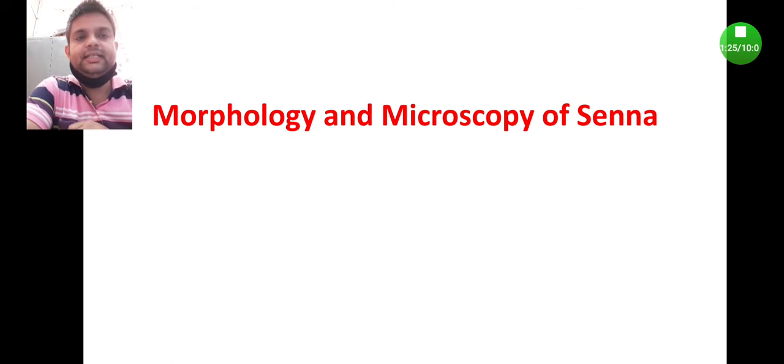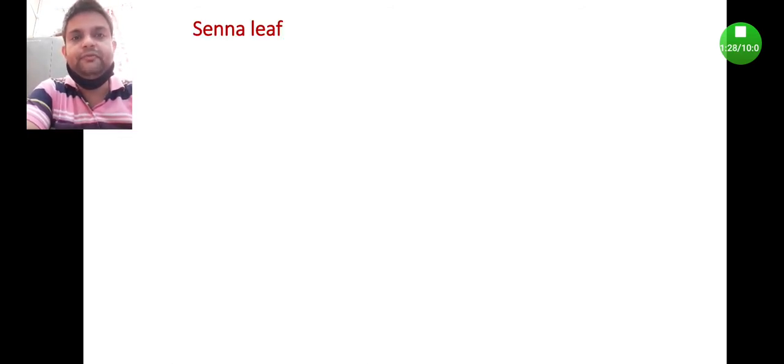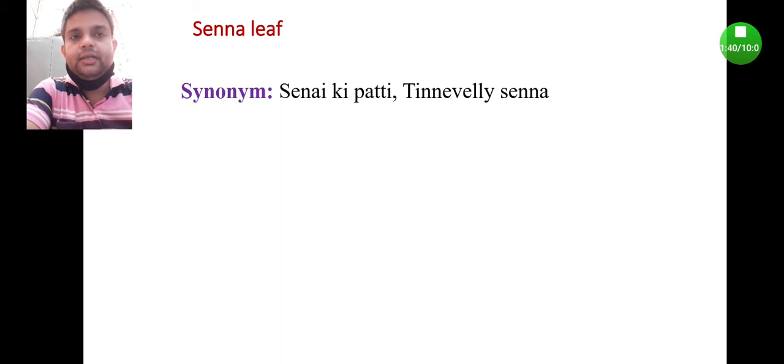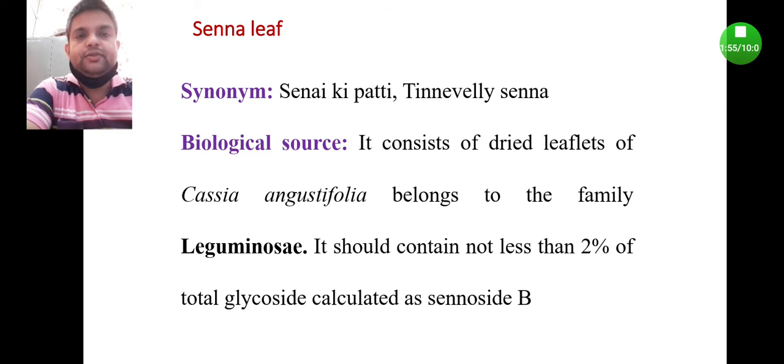Coming to today's part of the Senna leaf, Senna is a traditional Indian medicinal plant. Synonym is Sanai ki patty or Teneveli Senna. In Tamil Nadu there is a district called Teneveli where the Senna is cultivated commercially. Biological source: it consists of dried leaflets of Cassia angustifolia, belongs to the family Leguminosae. It should contain not less than 2% of total glycoside calculated as sennoside B, which is the main constituent present in the Senna leaf.